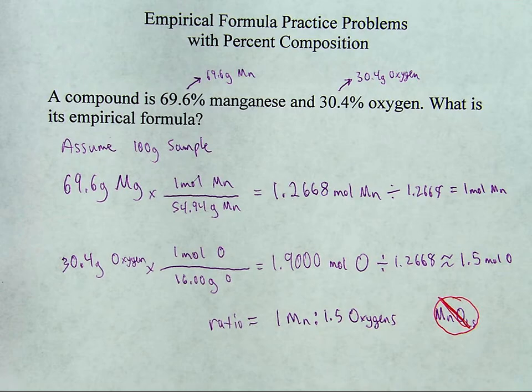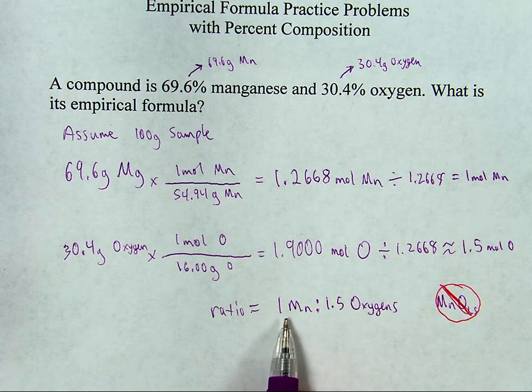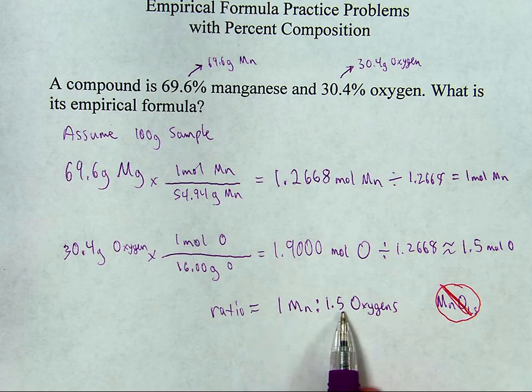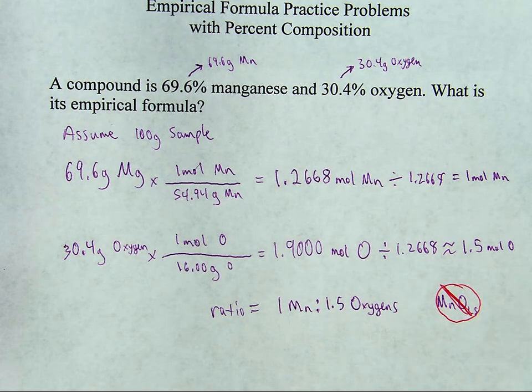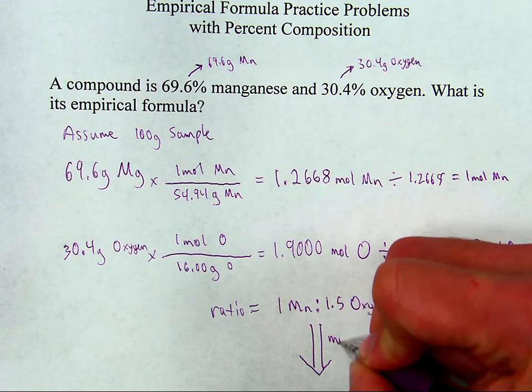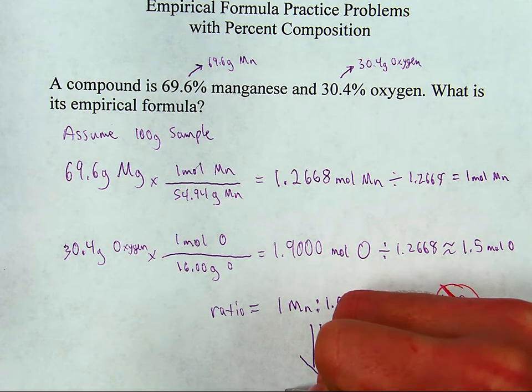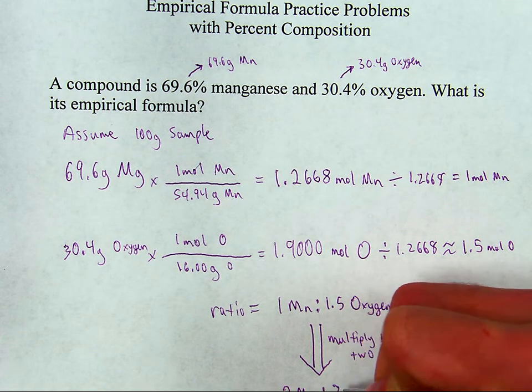All right, instead, we need to make this ratio into a whole number ratio. So let's see. If I times this by 2, will this work? 1 times 2 is 2. 1.5 times 2 is 3. Ah, that works. That makes it a whole number ratio. If it didn't work, I would have tried times it by 4 or 5 or 6 and kept going until something turned into a whole number ratio. But if I multiply by 2,